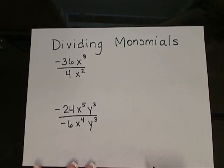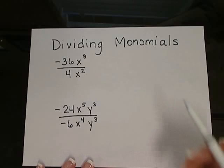When dividing monomials, we need to divide the numbers in front and then subtract the exponents.